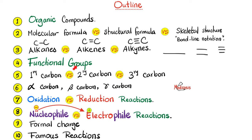We'll also talk about the famous functional groups, the distinction among primary, secondary, tertiary, and quaternary carbon, and the distinction among alpha carbon, beta carbon, gamma carbon, etc. What's the difference between oxidation and reduction? What's the difference between nucleophile and electrophile? How to calculate formal charge and some famous reactions that are just giveaways on your exam.